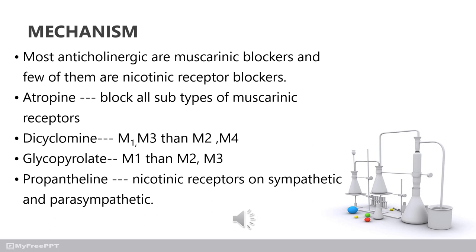Solanaceous alkaloids — example: atropine. Atropine blocks all muscarinic receptor types, which is why it is more useful therapeutically. Dicyclomine is an amino alcohol example.